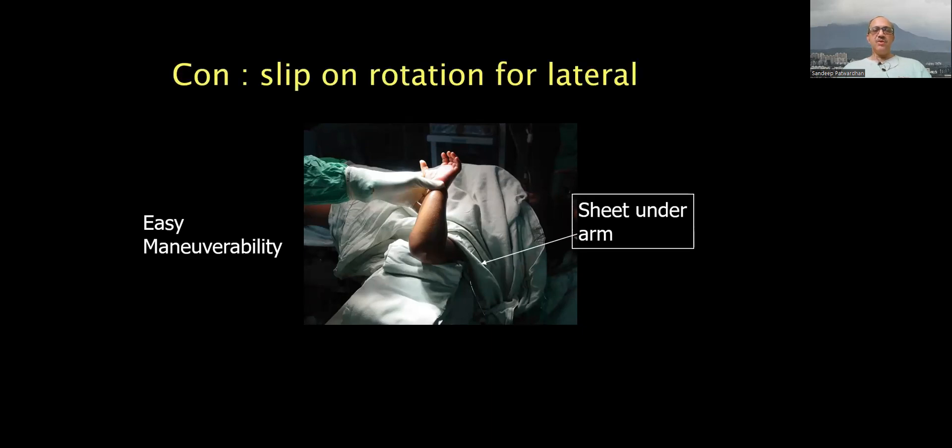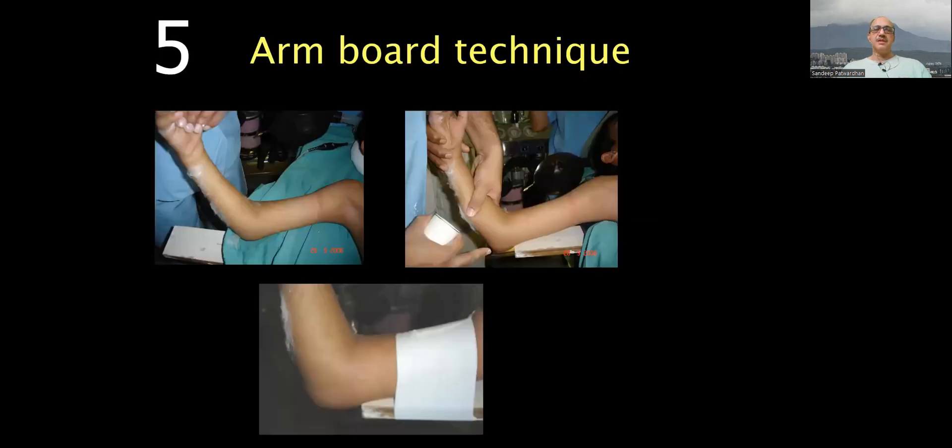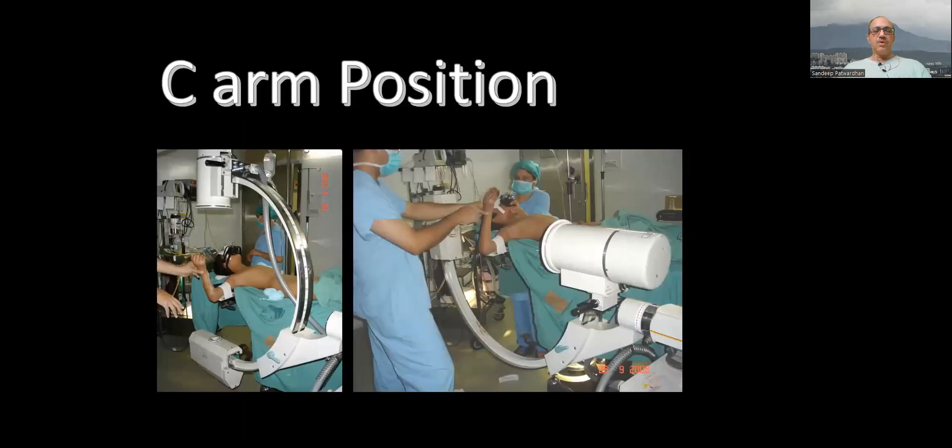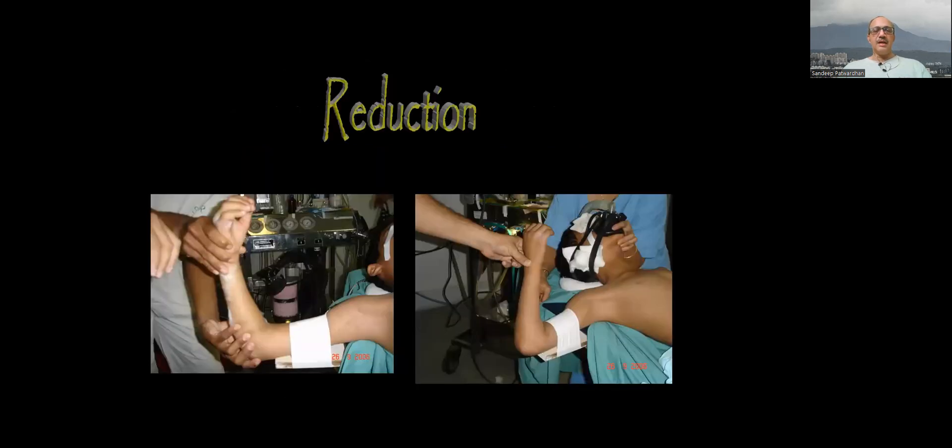But the problem is when you try to take a lateral and you rotate the shoulder, the reduction slips. So my technique is an armboard technique where I strap the proximal fragment with white paper tape to the proximal board and then maneuver only the distal fragment and rotate the c-arm to 180 degrees so that I get a true dead lateral without having need to rotate the arm at all.